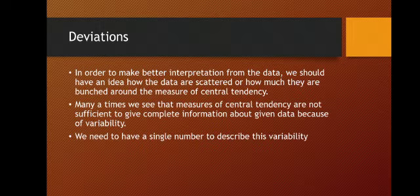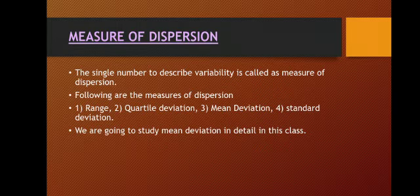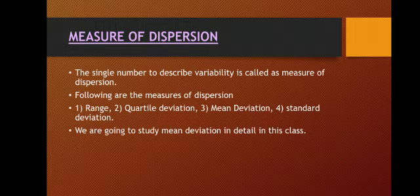Now, in order to make better interpretations from the data, we should have an idea how the data are scattered or how much they are bunched around the measure of Central Tendency. Many a times we see that measures of Central Tendency are not sufficient to give complete information about given data because of variability. We need to have a single number to describe this variability, and that single number is called the measure of dispersion.